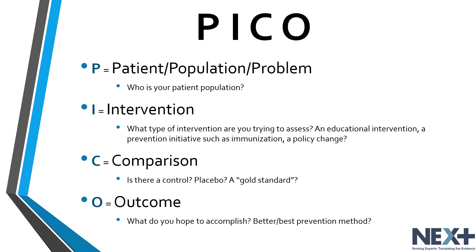You may want to limit your population to a particular age group or other special subgroup. I represents intervention. Here is where you want to address what type of intervention you are trying to assess — is it an educational intervention, a preventative intervention such as an immunization clinic, or is it a policy change? With the intervention, you should try to be as specific as possible.